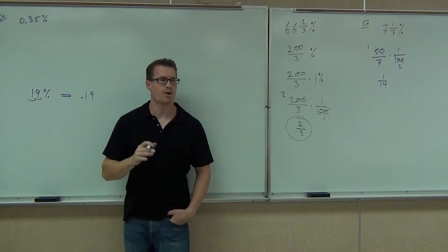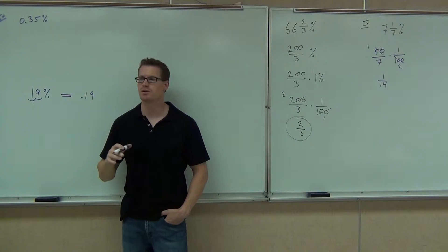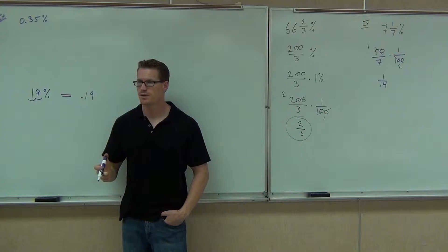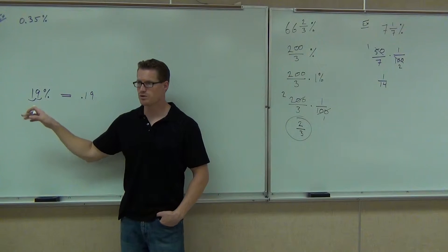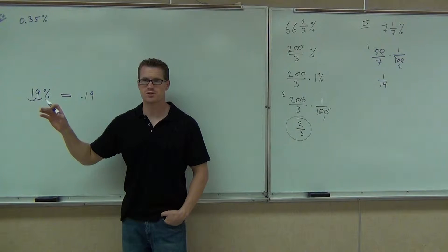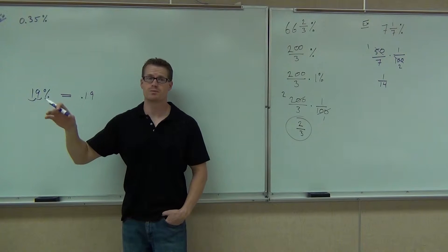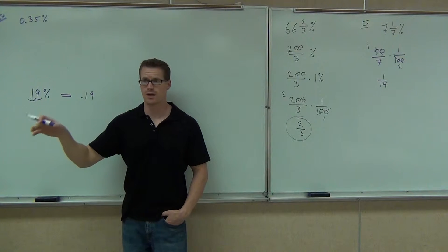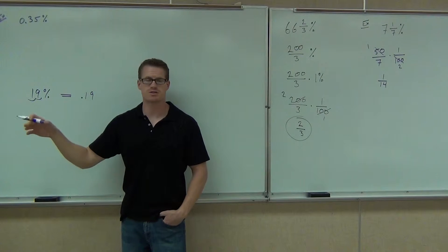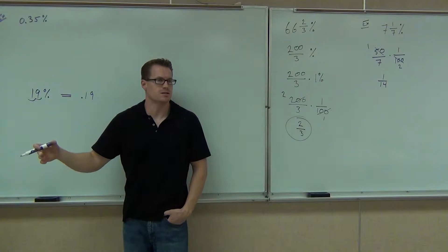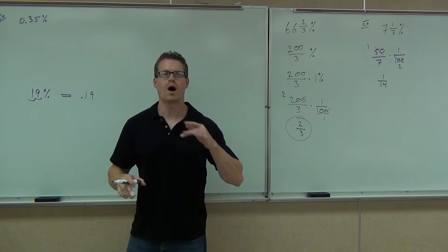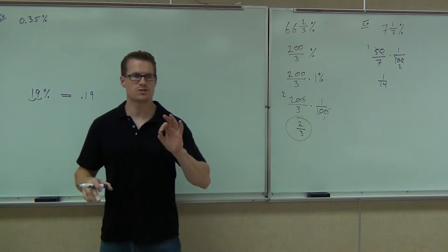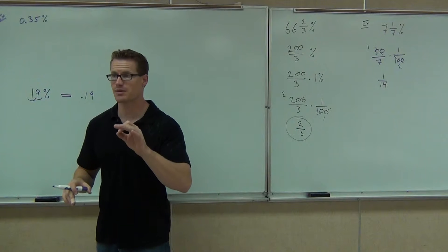Mathematics should work the same all the time, no matter what you have. So if you have 19 percent and you move it to the left, and you have 0.35 percent, you better darn well be sure you're going to move to the left. You can't move some things to the left, some things to the right — it doesn't make any sense. I want you to think about why you're going to move this to the left.